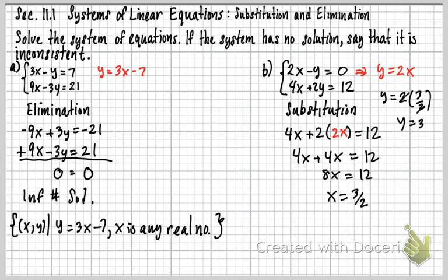So that's y equals 3 over 2. The twos cancel. I get y equals 3. So my ordered pair for this one would be 3 over 2, comma 3. So there's our answer for that one.